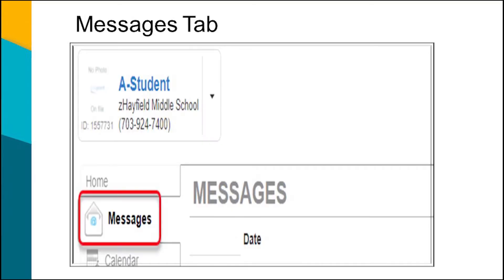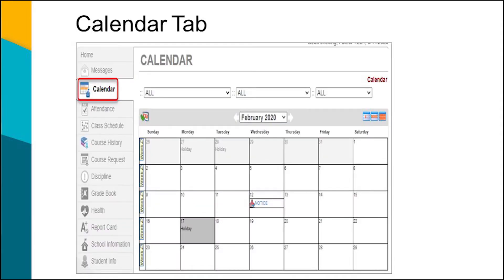The Message tab is not used by FCPS. On the Calendar tab for elementary, middle, and high school students, you will see important school dates such as holidays, vacations, and non-student attendance days. When a teacher enters an assignment into the gradebook for your middle or high school student, you will also be able to view the assignment on the calendar.